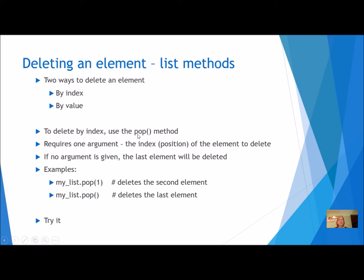To delete an element by index, I'm going to use the pop method. It requires one argument - the index of where you want to delete. It doesn't matter what the value is, whatever's at that index is going to be gone. If you use pop with no argument, the default is that it's going to be the last one. So it's kind of like append always goes to the end, pop always goes to the end unless you give it a specific position.